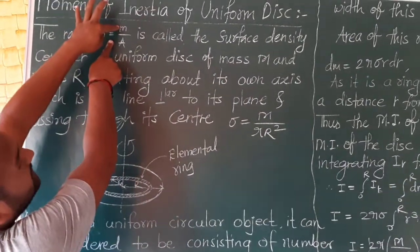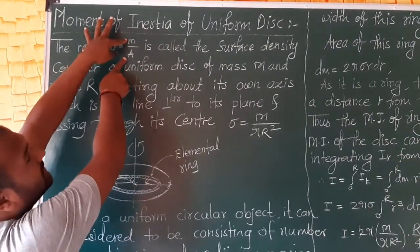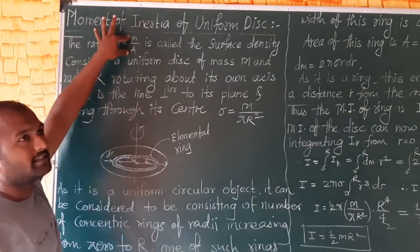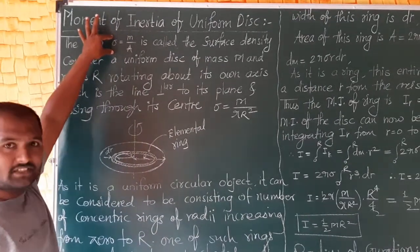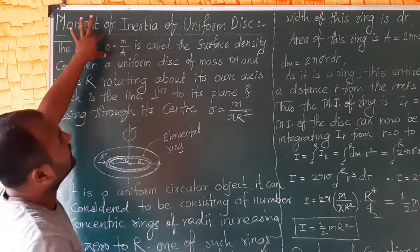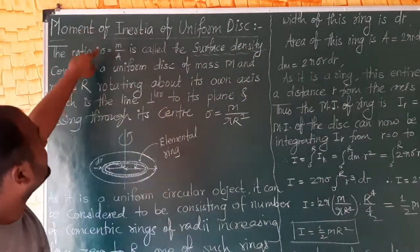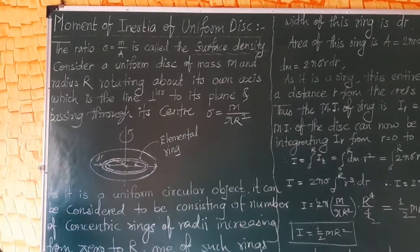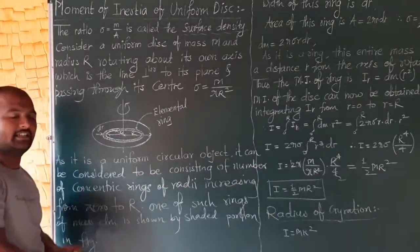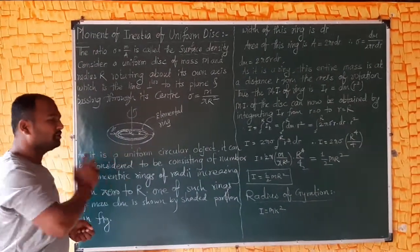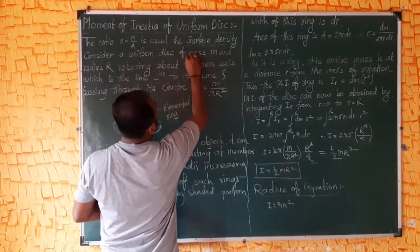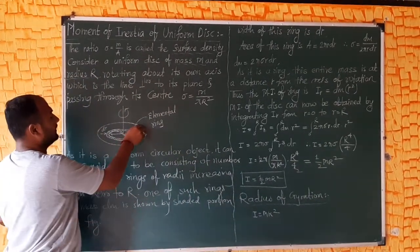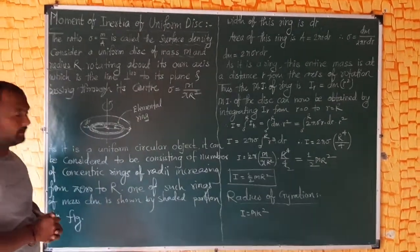Sigma is mass per unit area, which means surface density. So sigma is equal to mass per unit area — this is called the surface density. Consider a uniform disc of mass M and radius R. This is a uniform disc with mass M and radius R.